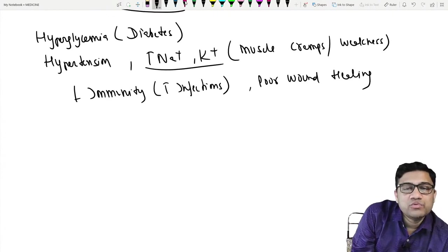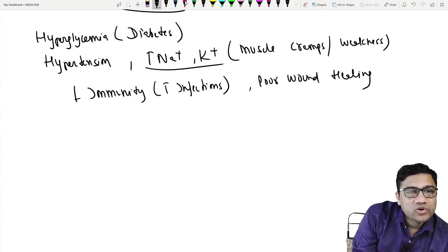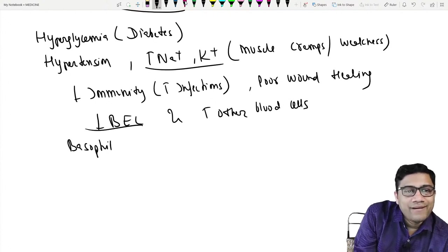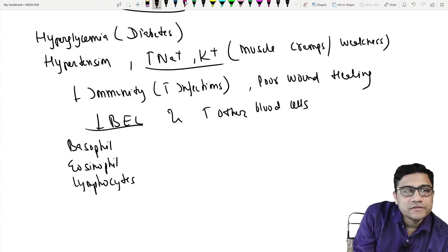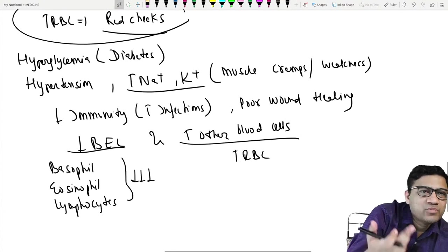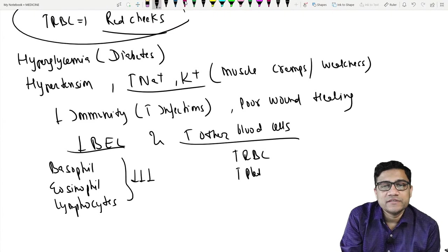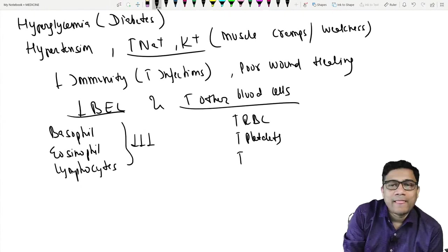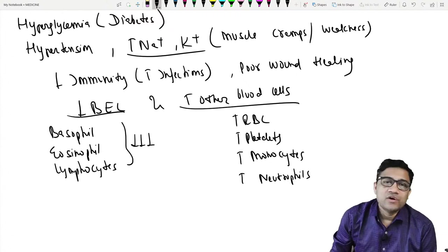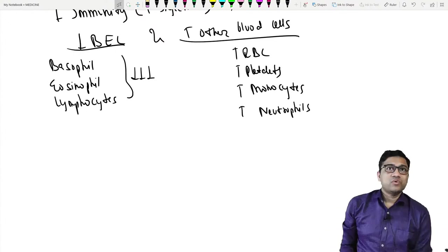Changes in blood count include decreased basophils, eosinophils, and lymphocytes. Increased cells include RBCs — causing red cheeks — platelets, and macrophages including monocytes and neutrophils.